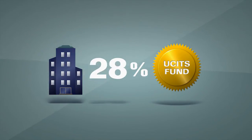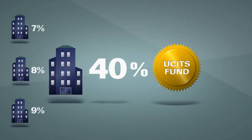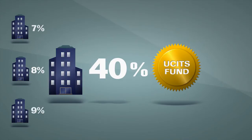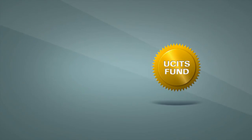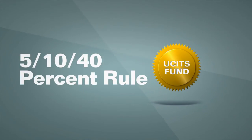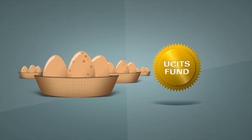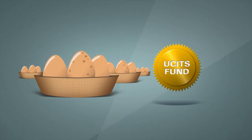No more than 40% of a UCITS' assets can be investments in companies that each represents more than 5%. This is known as the 5-10-40% rule. There are many more investment limits, all designed to increase diversification and thus spread and reduce your risk.